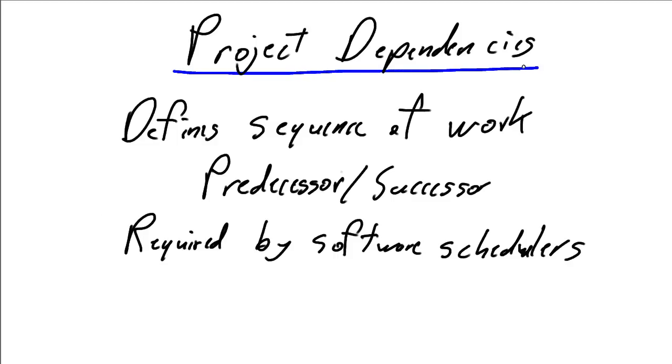Setting your project dependencies defines the sequence of the work. Effectively, you define the predecessor and the successor.